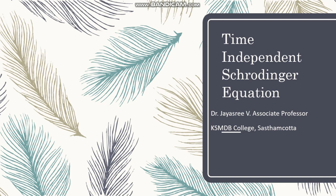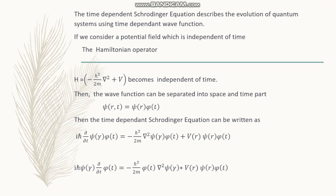Today we are going to discuss the time-independent Schrödinger equation. We have already studied the time-dependent Schrödinger equation, which describes the evolution of quantum systems using a time-dependent wave function. In the case of a time-dependent wave function, one system is evolving, and we have established the time-dependent Schrödinger equation.